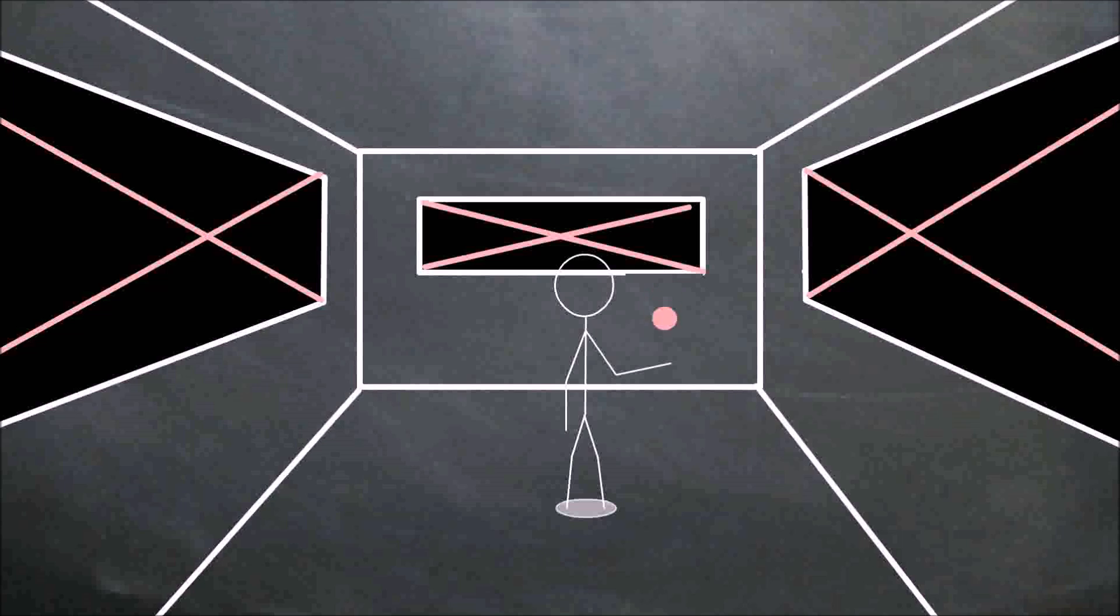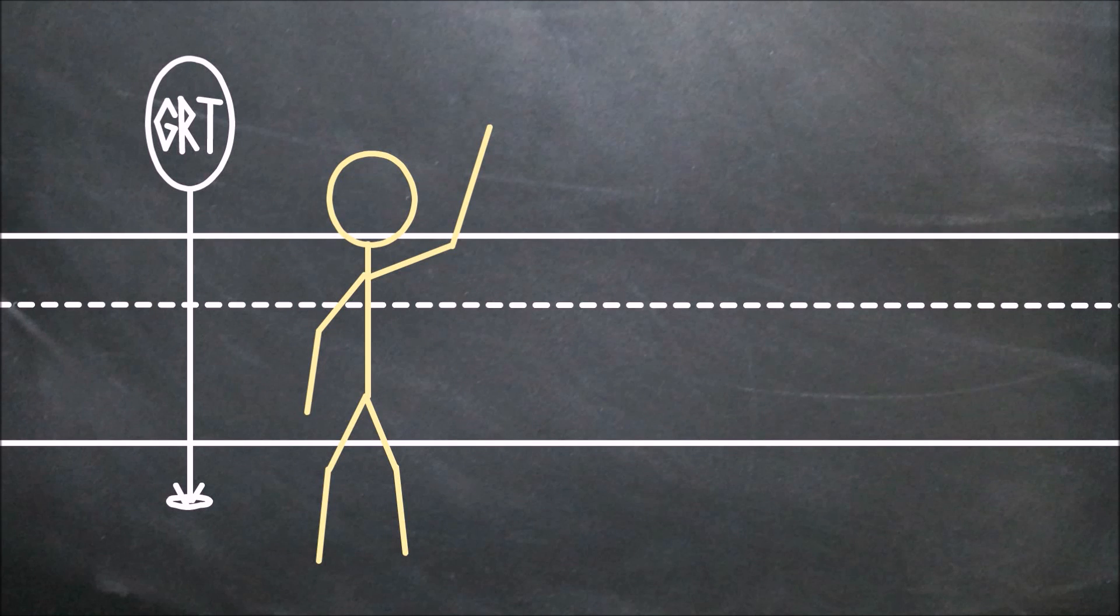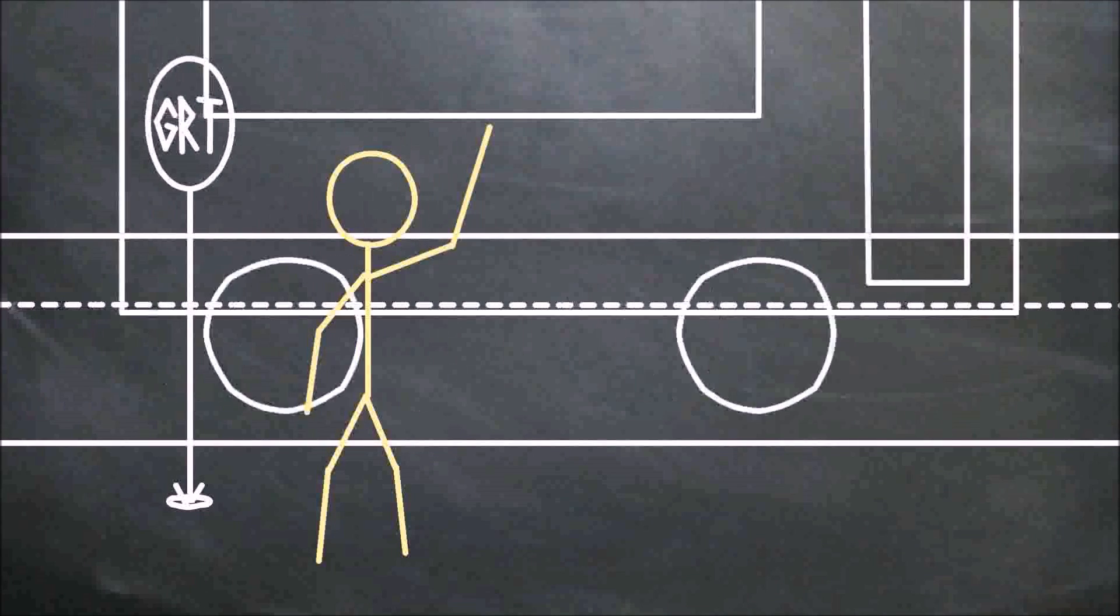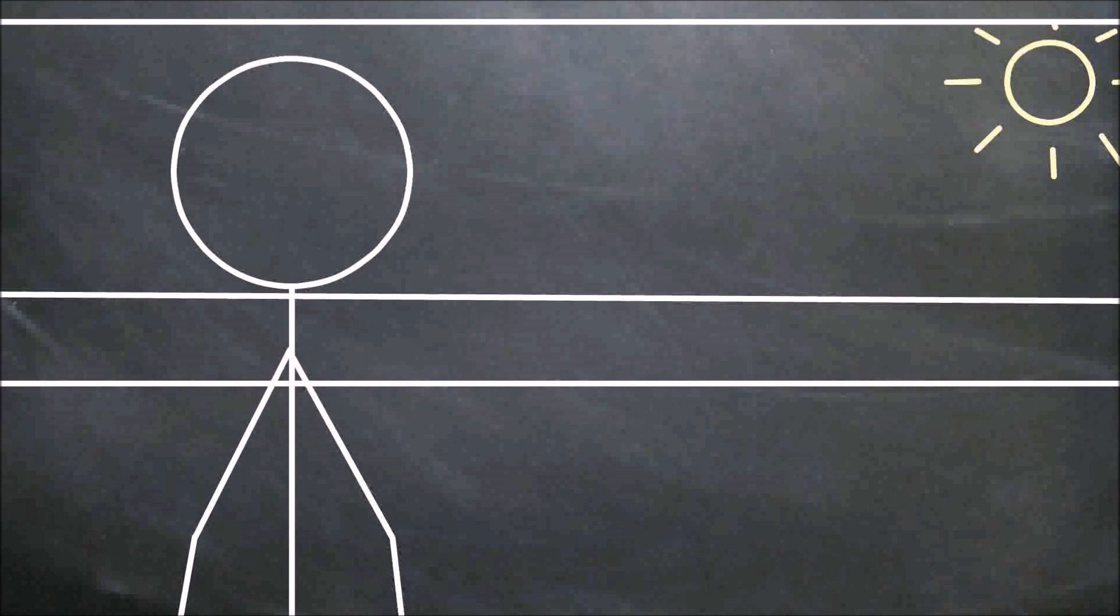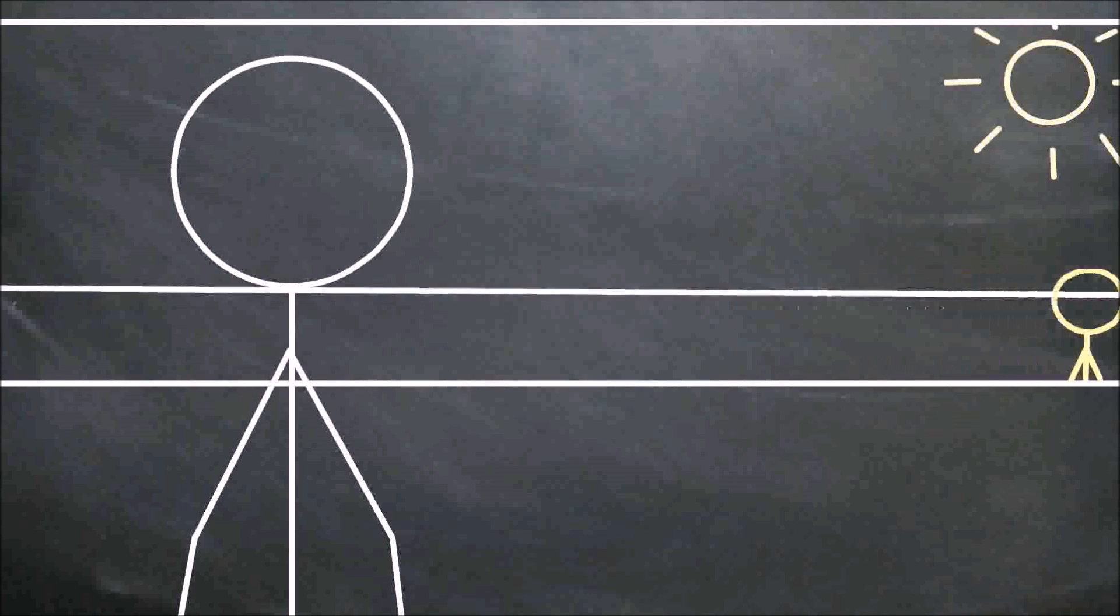So who is really standing still? Of course, it must be your friend on the ground. He can tell you with the utmost confidence that you're the one who's really moving. Although, you're clever. You can just tell your friend that you're in an equivalent situation and he's the one moving.